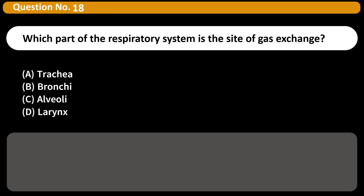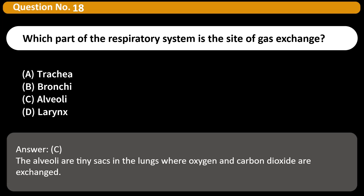Which part of the respiratory system is the site of gas exchange? A) Trachea, B) Bronchi, C) Alveoli, D) Larynx. Answer: C. The alveoli are tiny sacs in the lungs where oxygen and carbon dioxide are exchanged.